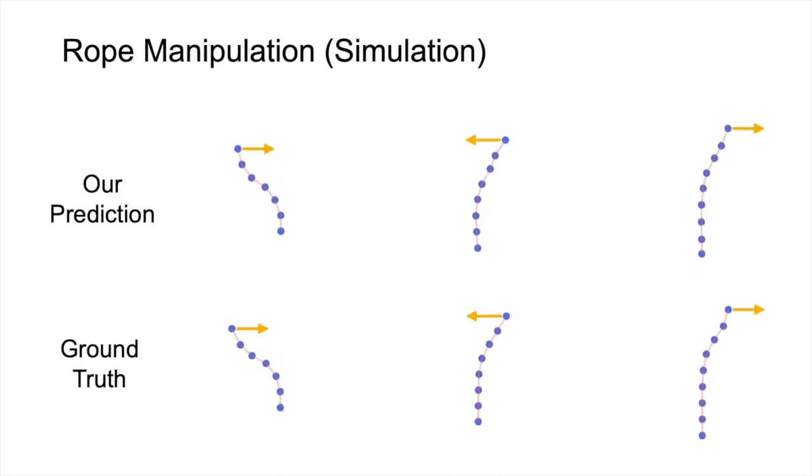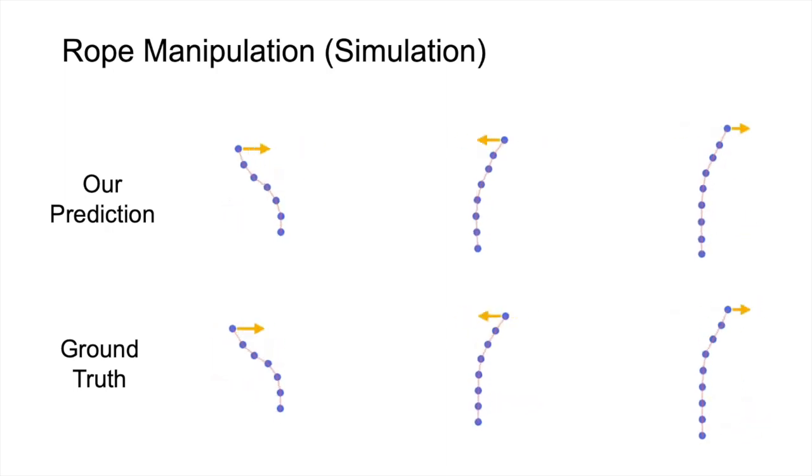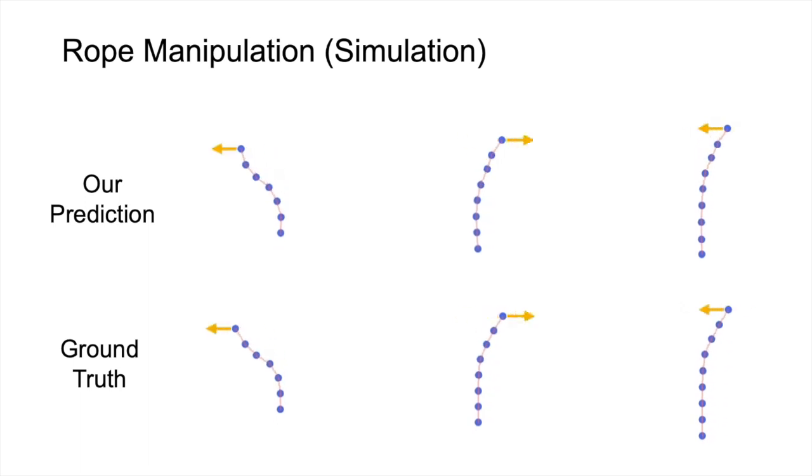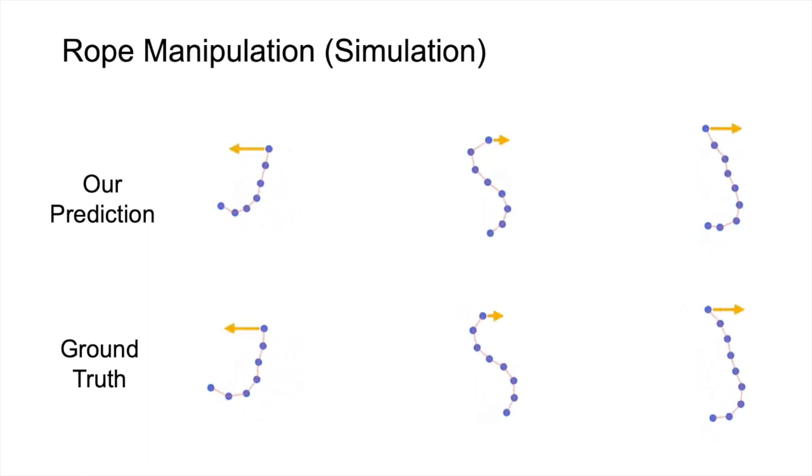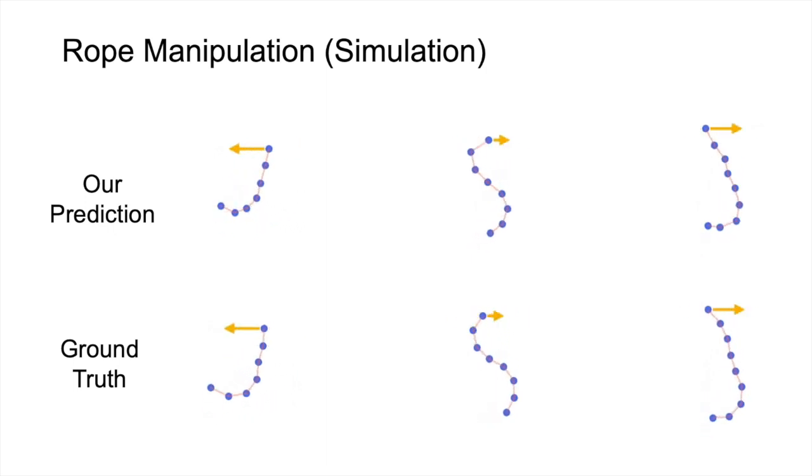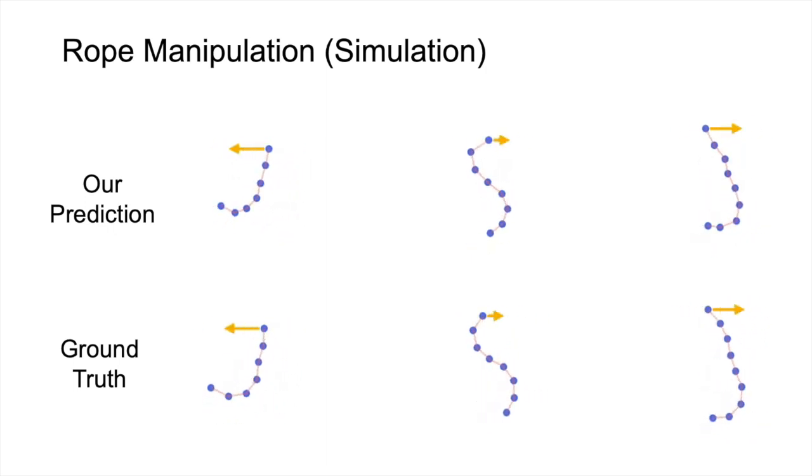Now let me show you some experiment results. The first task is to manipulate a rope by applying forces to the top of the rope. The first row is our model's prediction. Our model only takes the initial state as input, and keeps predicting future state under a given action sequence. You can see our prediction is very close to the ground truth shown in the second row.